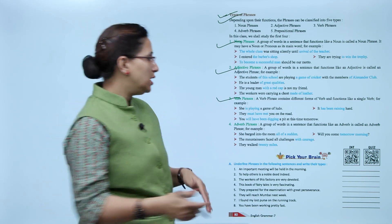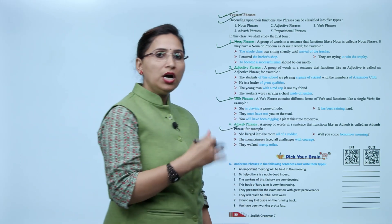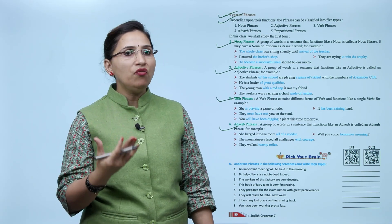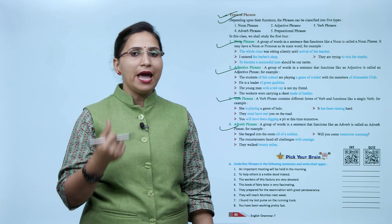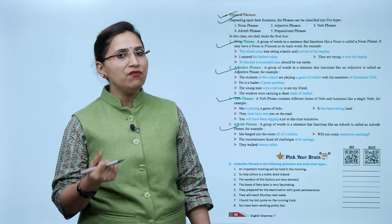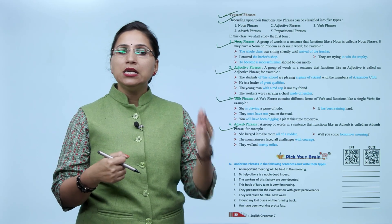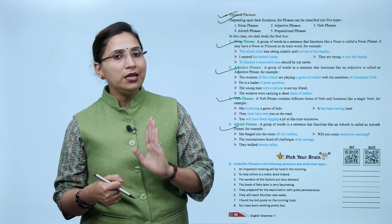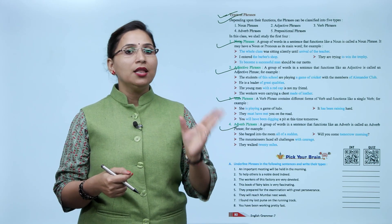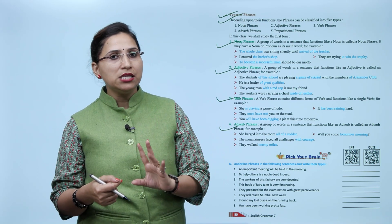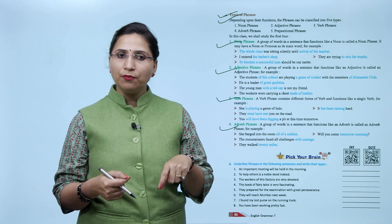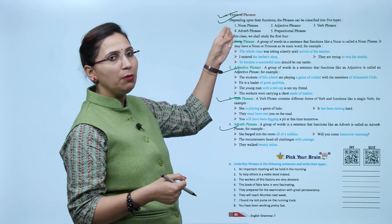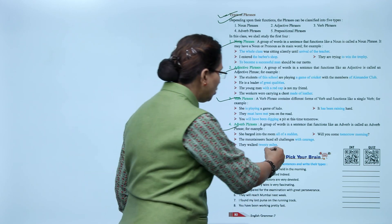Next is adverb phrases. A group of words in a sentence that functions like an adverb is called an adverb phrase. Jo adverb ki tarah action kare, usi tarah functions kare, unko bolenge adverb phrases. For example: 'She barged into the room all of a sudden.' 'The mountaineers faced all challenges with courage.' 'They walked 20 miles.' 'Will you come tomorrow morning?' In this way we have studied adverb, adjective, noun, and all phrases.